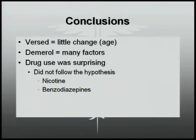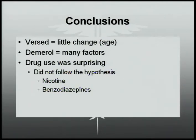This experiment brought many conclusions. The dose of Versed had little change from the factors, and this was only based on the age of the patient. Demerol, on the other hand, was affected by a majority of the factors. Drug use was most surprising to this experiment. Nicotine and benzodiazepines did not follow the hypothesis and articles. Nicotine had no effects on the drugs, and benzodiazepines only affected Demerol when it was suggested to affect Versed — which was assumed because Versed is a benzodiazepine.